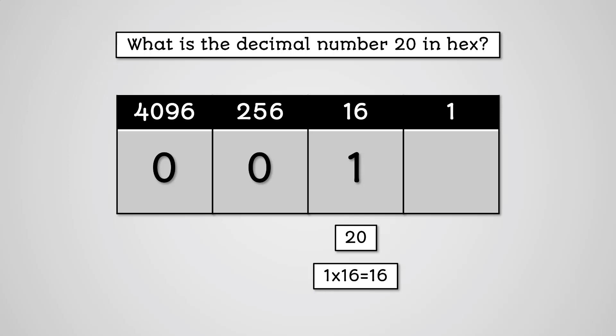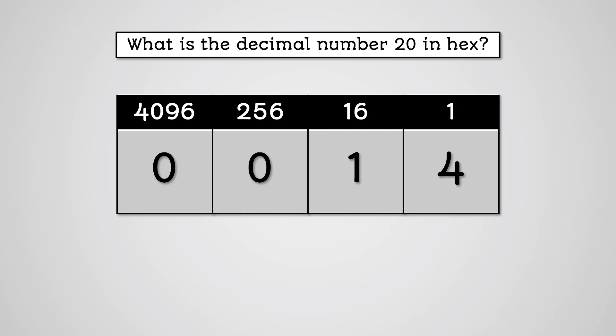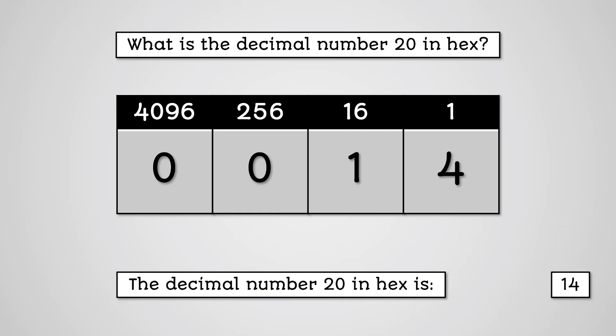Now we have to take 16 away from 20. 20 minus 16 equals 4. Will 1 fit into 4? Yes — how many times? 4. So we put 4 in the 1 column. So the hex value for 20 is 1 4. Notice we say 1 4 and not 14.